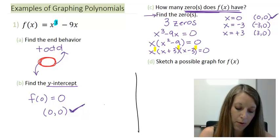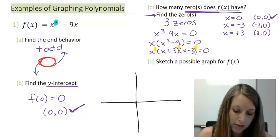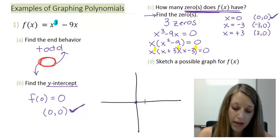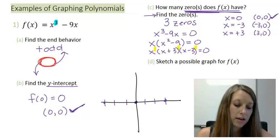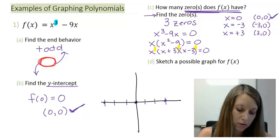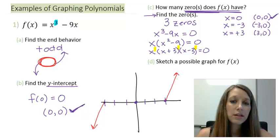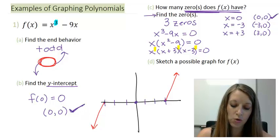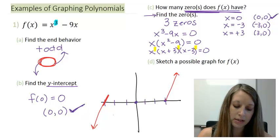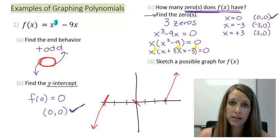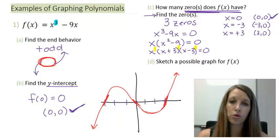All right, so let's sketch a possible graph here. The first thing that I'm going to do is I'm going to plot my intercepts, both my y-intercepts at (0,0) and my x-intercepts, the one at the same place, my one at (3,0), and my one at (-3,0). Now let me use my end behavior. So on the very left, I know that this graph is going down, and on the very right, I know that this graph is going up. Last but not least, I know that since each of my zeros are multiplicity one, it's going to cross through my graph at those points. So my possible sketch of this graph is going to look like this here.